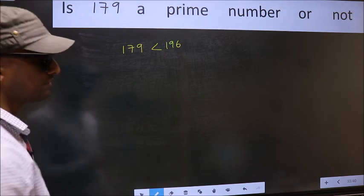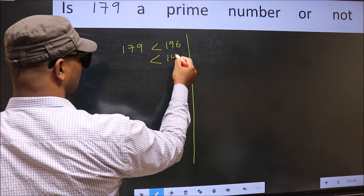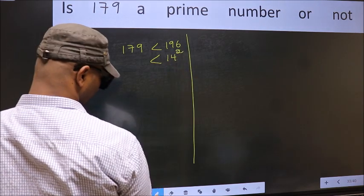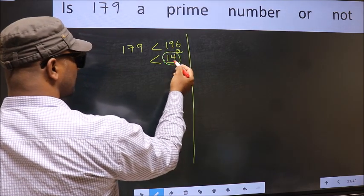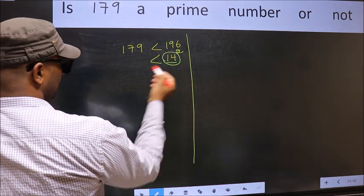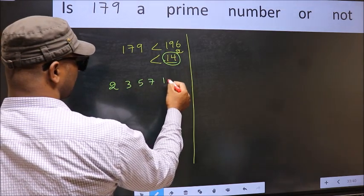Next. 196 is 14 squared. Now, you write all the prime numbers less than this number, 14. They are 2, 3, 5, 7, 11, 13.